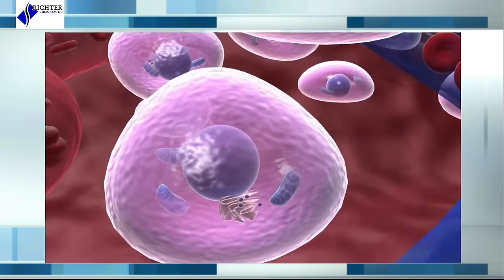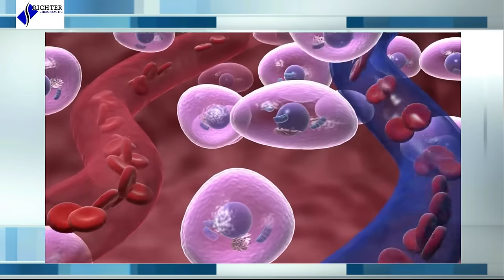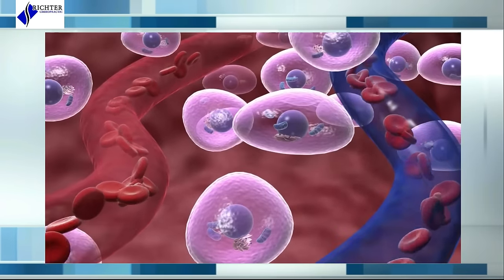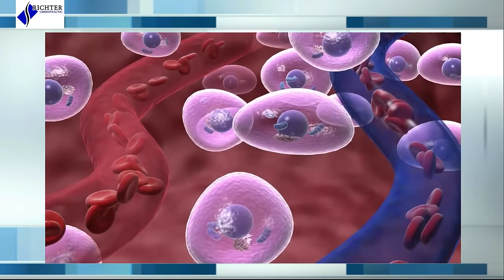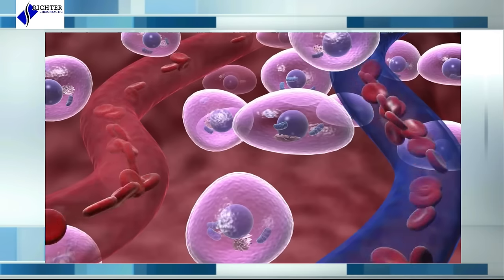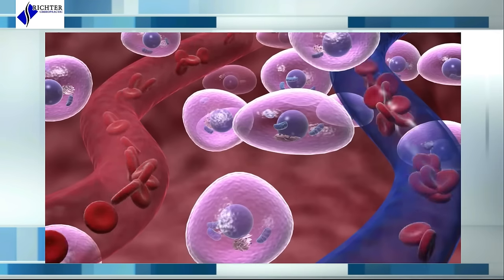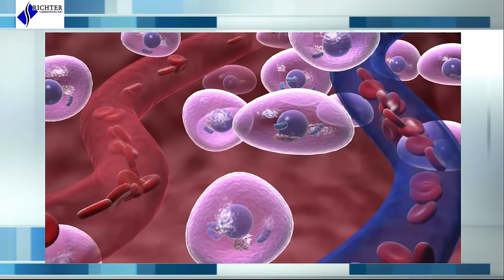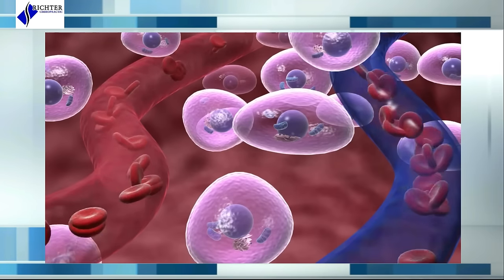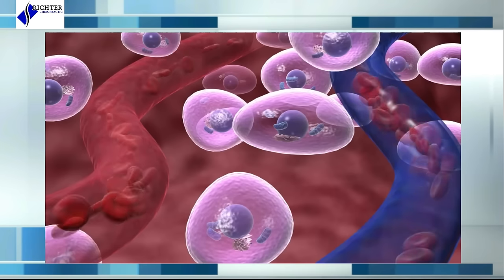Outside the cell, nitric oxide signaling drives vasodilation, which improves microcirculation in the damaged tissue, delivering oxygen, vital sugars, proteins, and salts, while removing wastes.